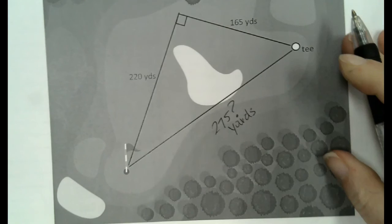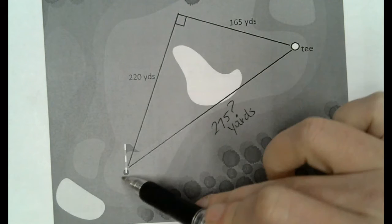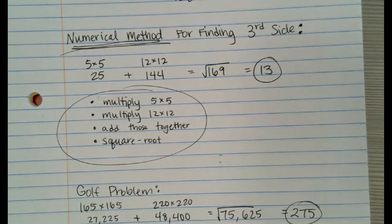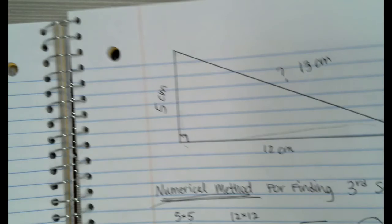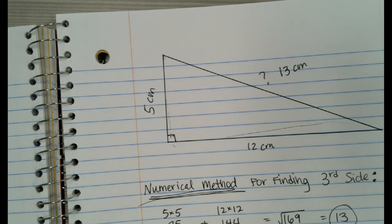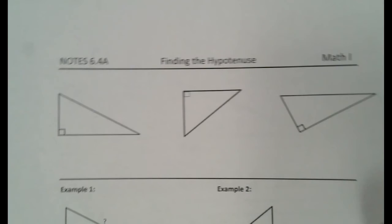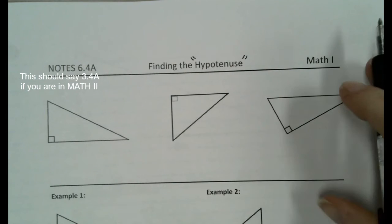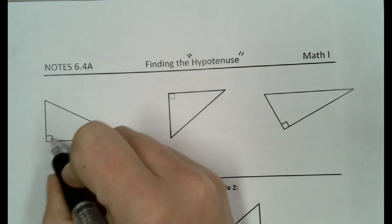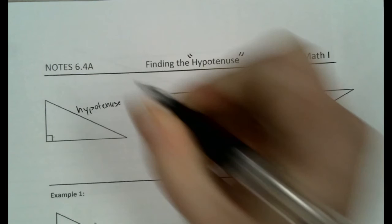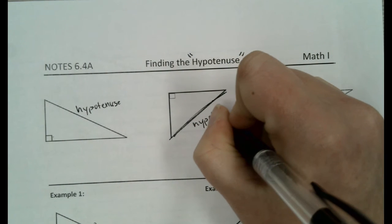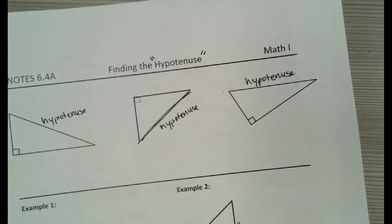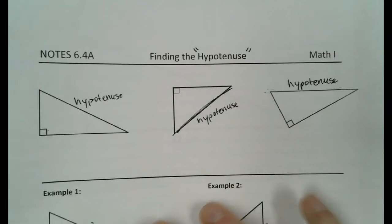Obviously that's the quickest way — straight across. So that leads me to the rest of our lesson today, which is about finding the third side in a triangle. That side is actually called the hypotenuse — that's a new vocabulary word. In a triangle like any of these, the side that is across from the right angle is called the hypotenuse. Today we are talking about finding the hypotenuse using our numerical method.